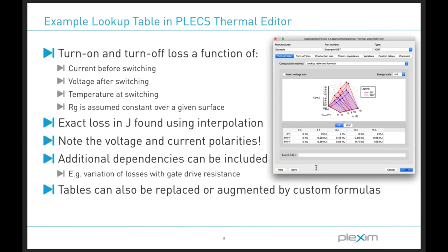I'm going to start looking at thermal parameters assigned to the IGBT and freewheeling diode. If I double-click here, we get the mass parameters window. As is the case for most components in Plex, we're using an idealized switch — very different from a SPICE-type package. We're turning on and off ideally with optional parameters for forward voltage drop and on resistance. In the thermal tab, we can define with a high amount of accuracy the thermal loss information.